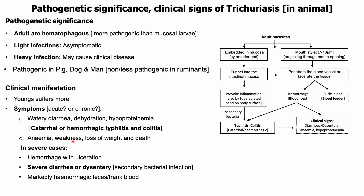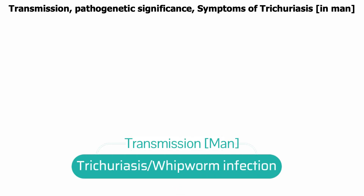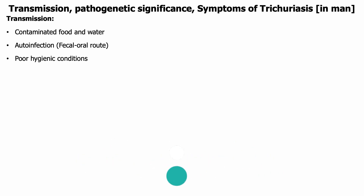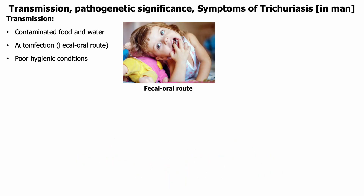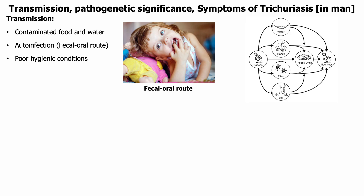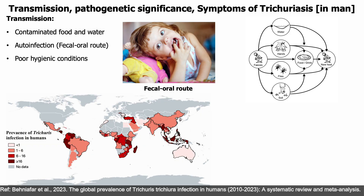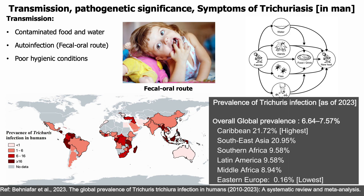Altogether, hemorrhagic typhlitis and colitis result. Clinically, infection is manifested by watery diarrhea, dehydration, hypoproteinemia, anemia, weight loss, etc. In severe cases, severe diarrhea or dysentery due to secondary bacterial infection along with blood deficiency is observed. Transmission of trichuriasis in humans, particularly in small children, occurs through eating soil-contaminated food and water via the fecal-oral route. Trichuriasis is the third most common soil-transmitted roundworm infection in humans globally, with an estimated 800 million people infected. It is mostly seen in tropical and subtropical countries.